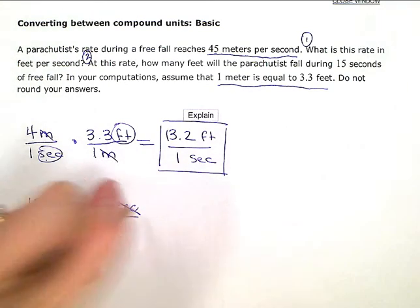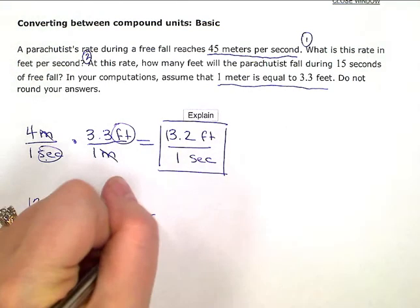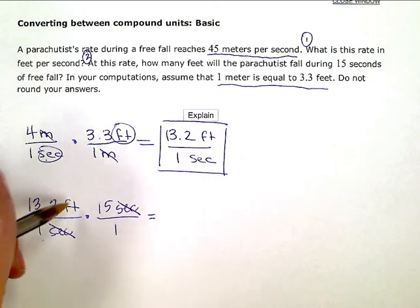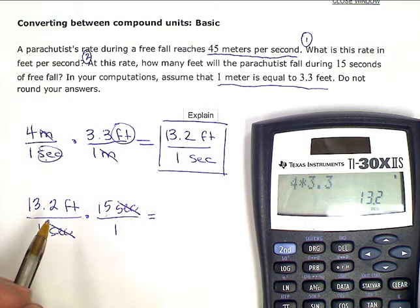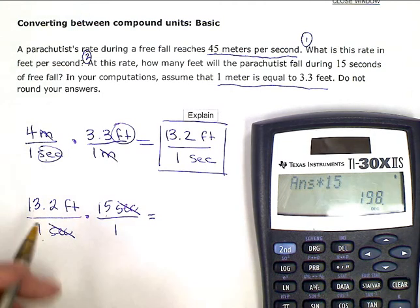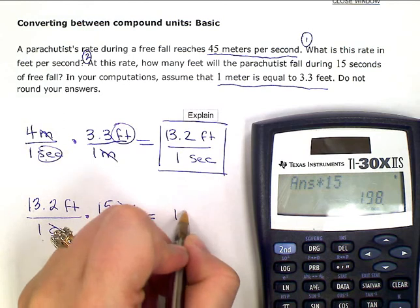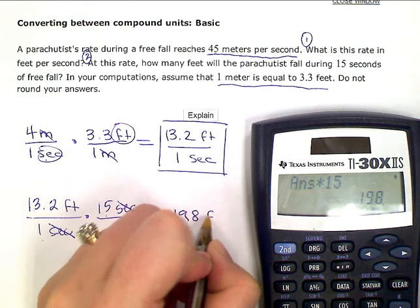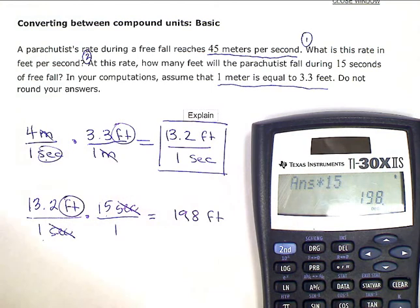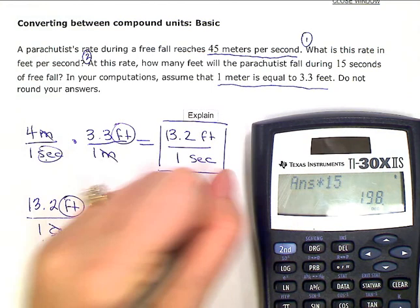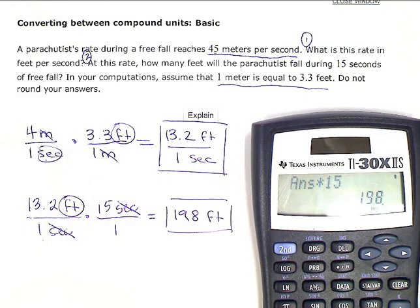And I'm left with 13.2 times 15 in my numerator. So 13.2 times 15, or 198 feet. That's my only unit left, and I just have 1 times 1 in the denominator. I can leave it off. So my answer to the second question is 198 feet.